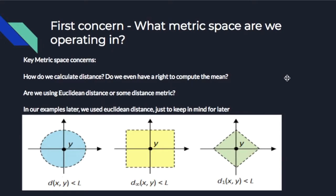Our first concern when choosing a clustering method is to look at the metric space in which we are operating in. Depending on the metric space, it changes what calculations are possible. So if we are in the Euclidean space, we can take the distance between points relatively easily. However, if we are not, then it gets a little bit more difficult. For all of the methods that we are going to teach you about today, we will be in the Euclidean space, so just keep that in mind when moving forward.